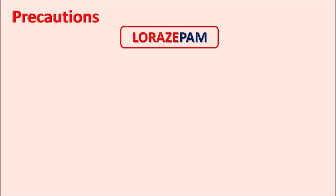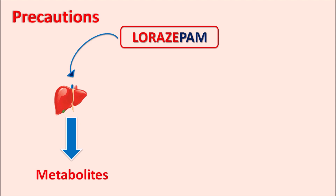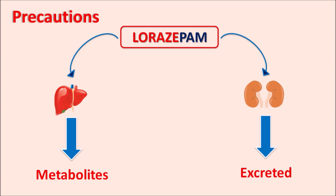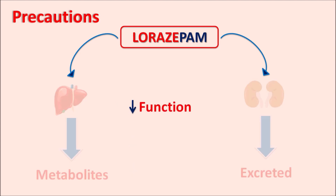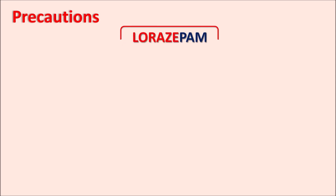A second important precaution: although lorazepam is short-acting, it is still metabolized by the liver through phase-2 reactions — conjugation reactions converting it to conjugated metabolites, which are then excreted in the urine via the renal system. In patients with decreased hepatic or renal function, lorazepam may accumulate in the serum, increasing sedative and hypnotic activity. Therefore, this drug should be given carefully to patients with renal and hepatic dysfunction, with dose reduced based on severity.